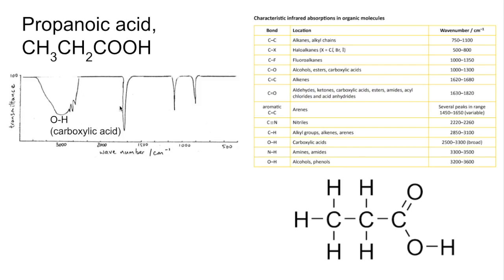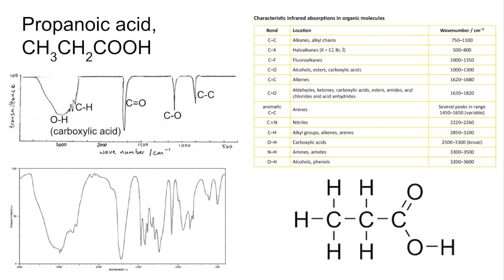These little spikes to the left-hand side of the O-H would be C-H absorptions. There's the C double bond O, C single bond O, and C single bond C. The real spectrum looks like that.